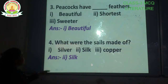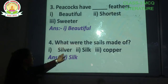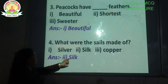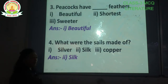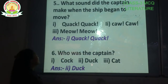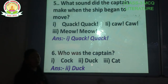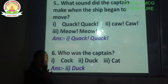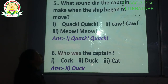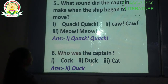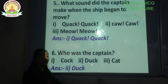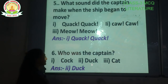Question number 4: What were the sails made of? Options are: silver, silk, copper. The correct answer is option number 2 — silk. The sails were made of silk. Question number 5: What sound did the captain make when the ship began to move? The captain was a duck. Options include quack quack. The correct answer is option number 1 — quack quack.